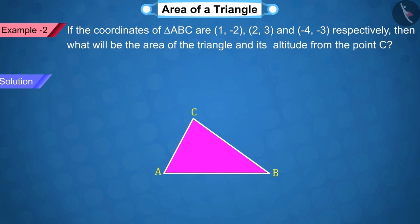Let's discuss this. To start with, let's draw triangle ABC which looks like this. Where we assume the coordinates of the point A of the triangle as X1 equals 1, Y1 equals -2, the coordinates of the point B as X2 equals 2, Y2 equals 3 and the coordinates of the point C as X3 equals -4, Y3 equals -3. With the help of these values, can you find the area of the triangle?